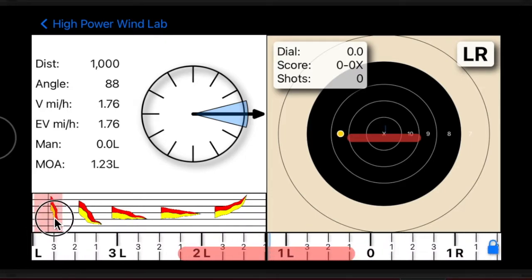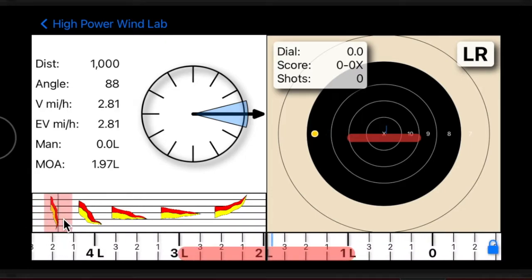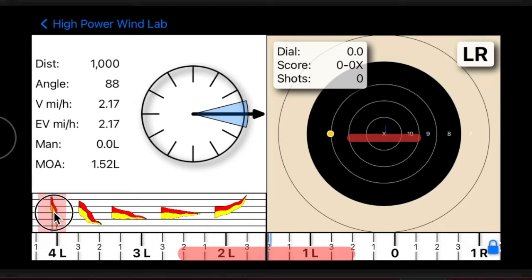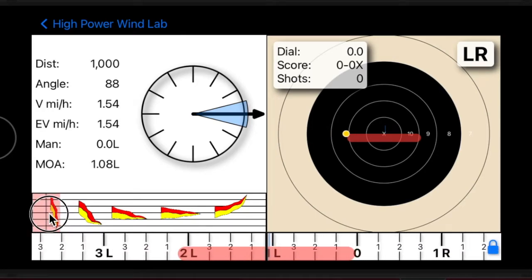As you can see, when we adjust the velocity of the wind, the holdover aim point adjusts accordingly. In this case, for the given wind velocity, the holdover aim point is approximately 1 minute left of center.